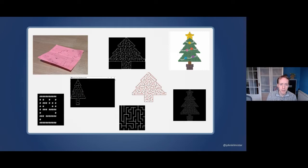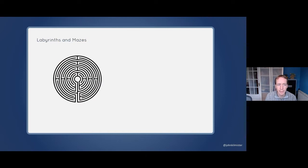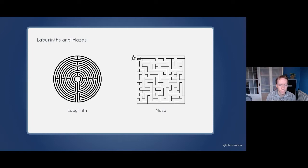That leads nicely onto the shaped mazes, which is where we'll end our presentation today — showing you how to generate shaped mazes. Let's start right back at the beginning and look at what is a maze and what is a labyrinth. A labyrinth has a single path all the way through with no dead ends or alternate routes, while a maze has many dead ends, lots of long corridors, false routes, and various other characteristics. It's mazes that we're going to spend our time looking at today.